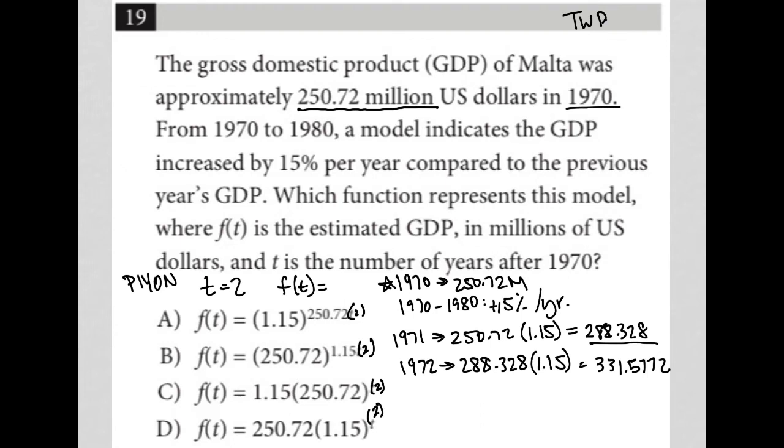So choice A, 250, 1.15 to the basically 501.44 power. I put that in my calculator. I do not get 331.5772, so that's gone.